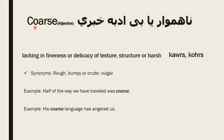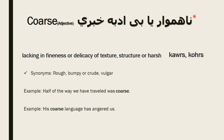The next word is coarse. Coarse is also an adjective. The Pashto meaning of coarse relates to lacking fineness or delicacy of texture. The structure is harsh, rough, or bumpy — not smooth. It can also mean crude or bulky.